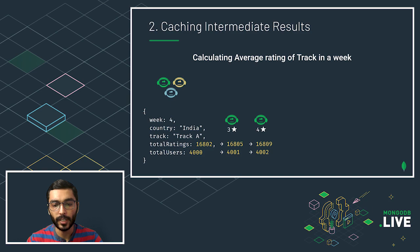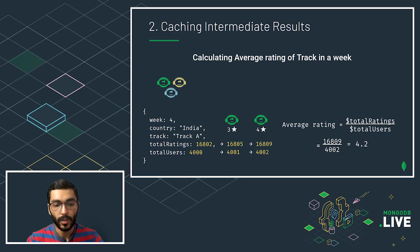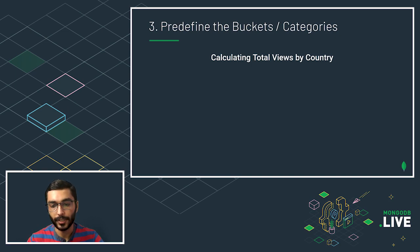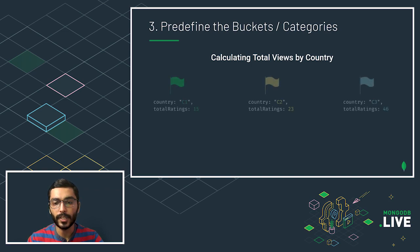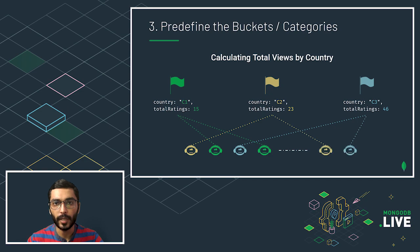When we need the final answer, we simply pick the intermediate results and compute: average rating = total rating / total users. A third technique is pre-defining buckets or categories. For example, to find total views by country, we already know all countries and can pre-define the buckets. Whenever a user comes in, we tag them to the appropriate bucket, and all incoming users are handled consistently without breaking the flow.